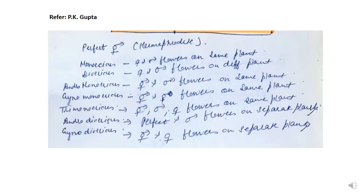Now in plants, there are many kinds of flowers and based on that they are named as different types. For example, a perfect flower is also called a hermaphrodite flower where the male and female reproductive parts are present in the same flower. Monoecious plants are those plants where the male and female flowers are present on the same plant.